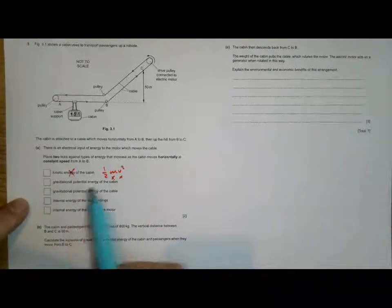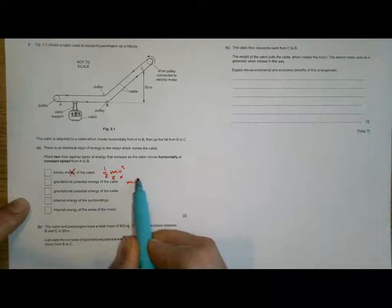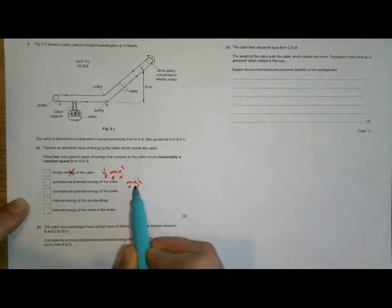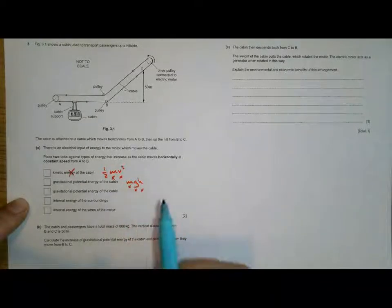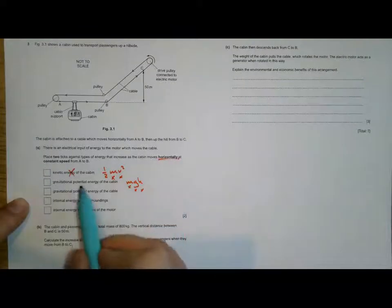The gravitational potential energy, this is mgh. The mass isn't changing, the strength of gravity isn't changing, and the height isn't changing. So that can't be true.